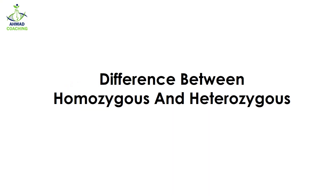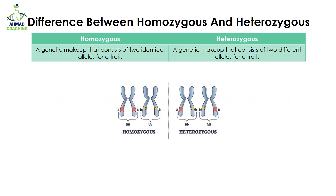Welcome to Amat Coaching. Today we are going to study about the difference between homozygous and heterozygous. Homozygous is a genetic makeup which consists of two identical alleles for a particular trait — homo means same, so both alleles are going to be same. Heterozygous, on the other hand, has two different alleles for a particular trait — hetero means different.